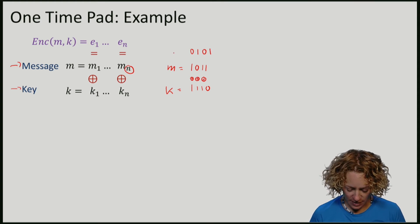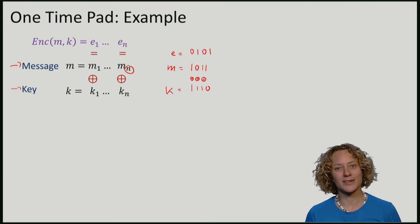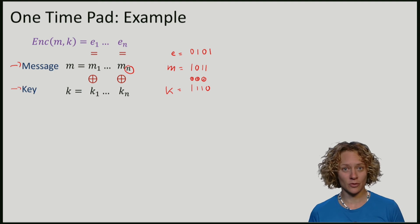So my encrypted text, the bits that Alice would send across to Bob, is given by 0, 1, 0, 1.